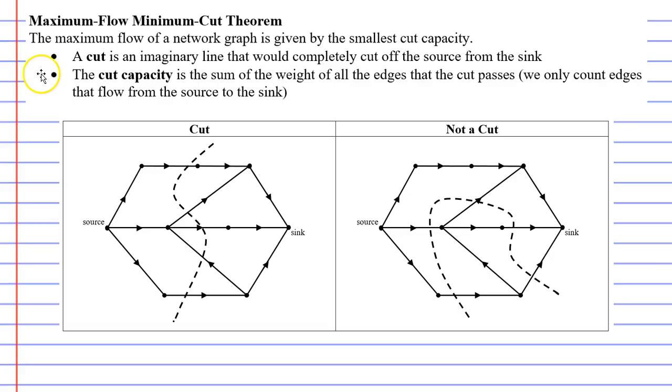Now the maximum flow minimum cut theorem involves two steps. Firstly we need to make what is called a cut and then afterwards we need to calculate the cut capacity. Now on any network flow diagram you're going to have what is called a source and a sink. Basically the source is your starting point and the sink is your finish point.